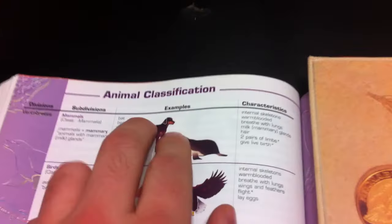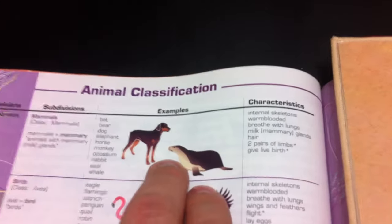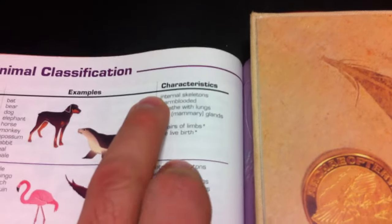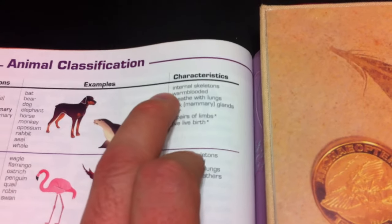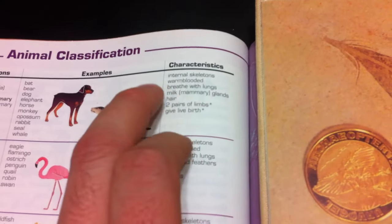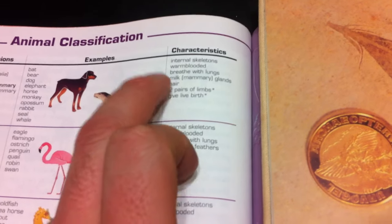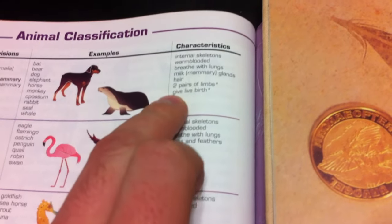So for example he recognized a class called mammals which were characterized by having internal skeletons, they're warm-blooded, breathe with the lungs, they produce milk from mammary glands, they have hair, two pairs of limbs, and they give live birth.